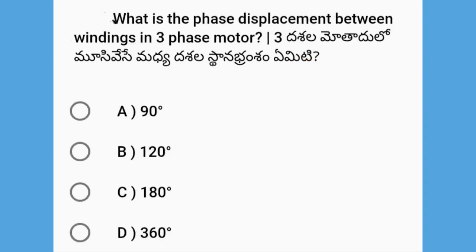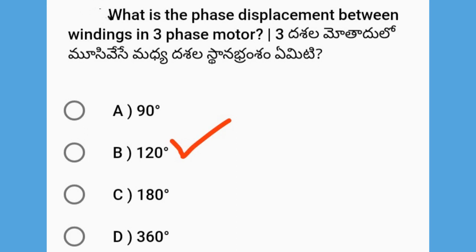Next, what is the phase displacement between windings in a three-phase motor? In a three-phase motor, the phase displacement between windings is 120 degrees. We can see R, Y, B phases in the three-phase motor, each displaced by 120 degrees.